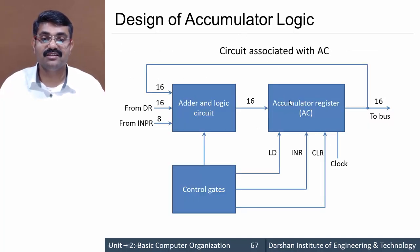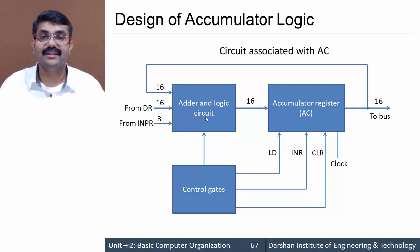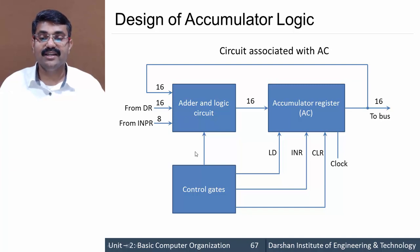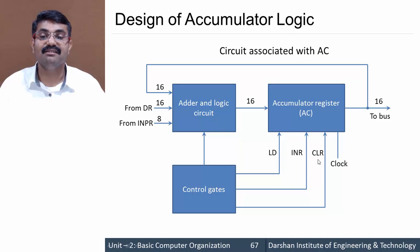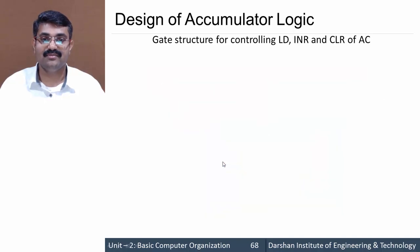Now let's see the general block diagram discussed in the common bus system. This is the normal arrangement for the accumulator register — a 16-bit accumulator register with three inputs: load, increment, and clear, plus clock. The input to this accumulator register comes from the adder and logic circuit, which receives its inputs from the accumulator, the data register, and the INPR register.